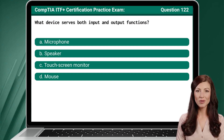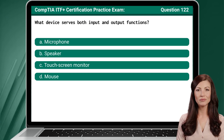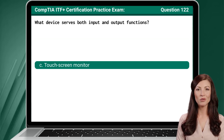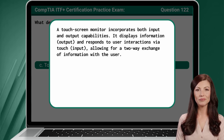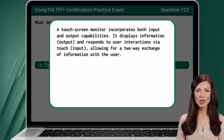Question 122. What device serves both input and output functions? The answer is C. Touchscreen monitor. A touchscreen monitor incorporates both input and output capabilities. It displays information — output — and responds to user interactions via touch — input — allowing for a two-way exchange of information with the user.